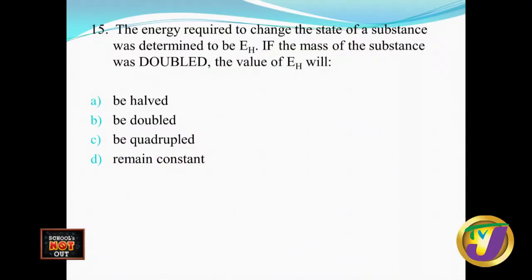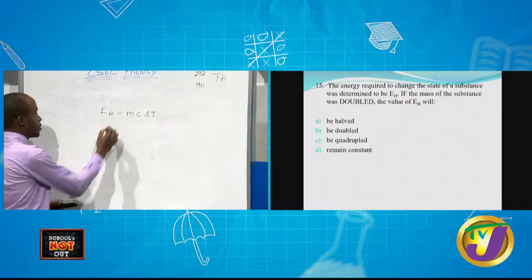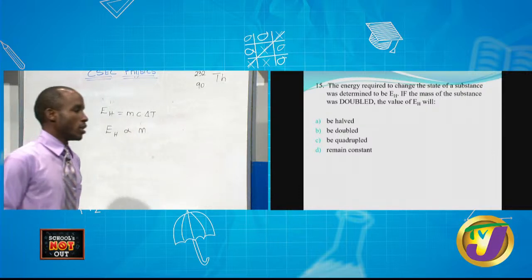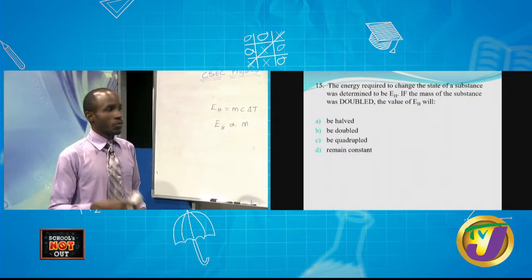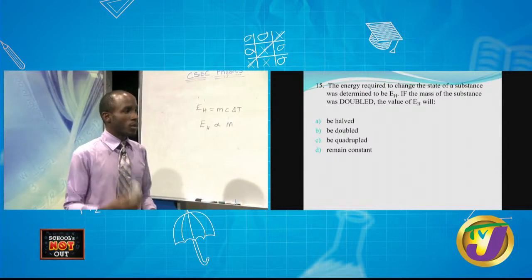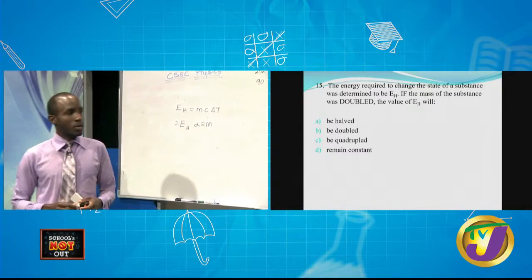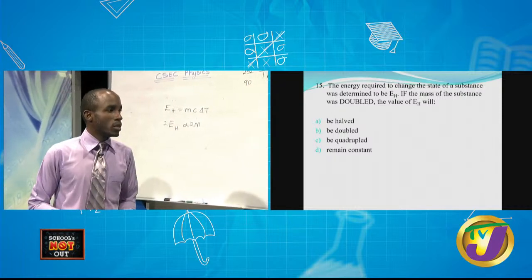The energy required to change the state of a substance was determined to be EH. If the mass of the substance was doubled, the value of EH would be — going back to the equation for heat capacity, energy and mass are directly proportional. If you recall the lesson about proportionality, if you double one, the other will also double. So if you double the mass, EH will also need to be doubled if you want to keep everything constant. The answer is B.